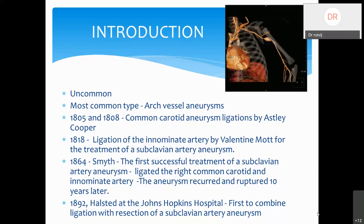In 1864, the first successful treatment of a subclavian artery aneurysm was performed by ligating both the right common carotid and innominate artery. The aneurysm recurred and ruptured about 10 years later, but the patient survived for 10 years. In 1892, Halsted at Johns Hopkins was the first to combine ligation with resection of the aneurysm — so it was until 1892 that the concept of resection came into treatment of aneurysms.